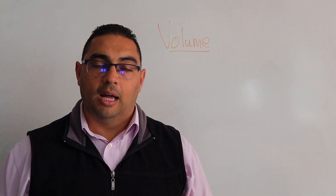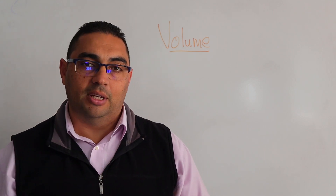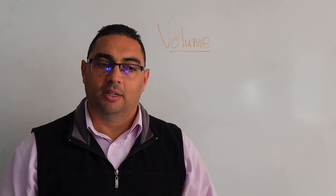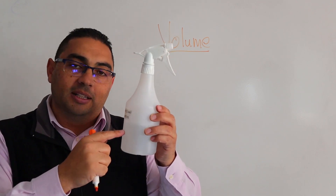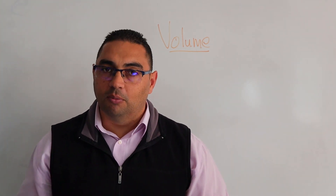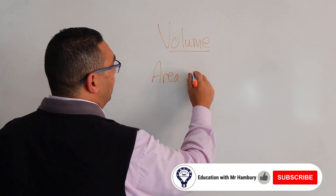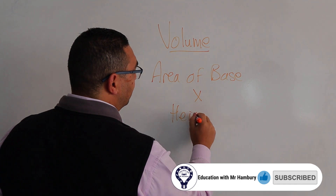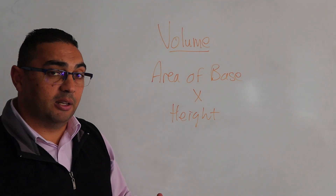Let's talk about volume. Volume is very simple — we're looking at the inside of a 3D shape. Things like the inside of a swimming pool: how much water can it hold? How much liquid can a bottle or canister hold? That's what we're talking about when we refer to volume. The formula is simple: we take the area of the base and multiply it by the height.